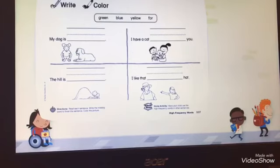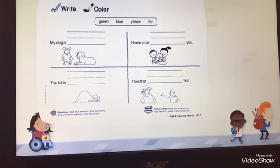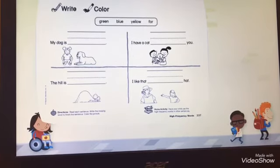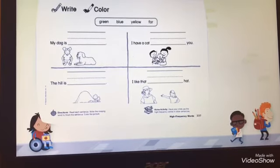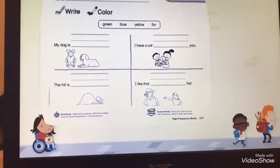Now we have to choose one word for each sentence below to complete the sentences. Now let's start with the first sentence. What can you see here?